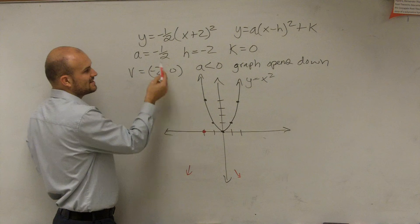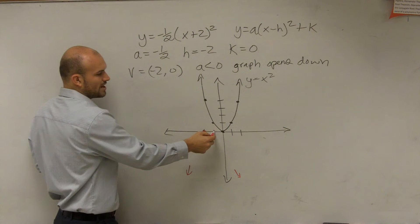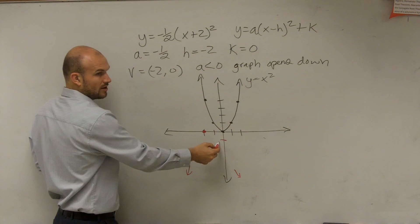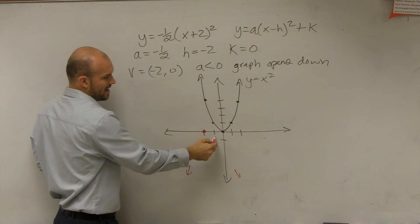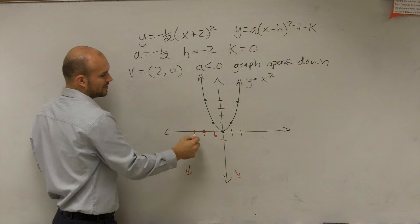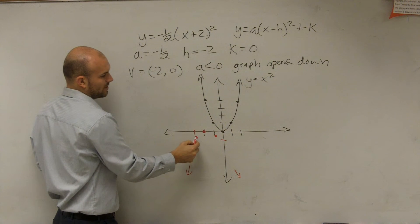So technically, if this a was 1, you go to the right 1, down 1, right? But now we're not going over, we're going over 1, down, times 1 half. And then you're going to go to the left, down 1 half.